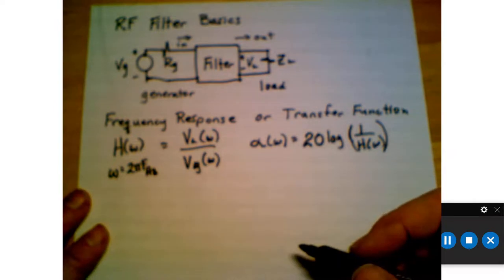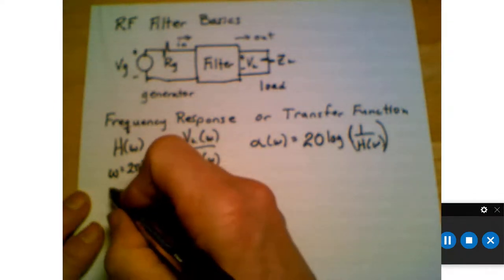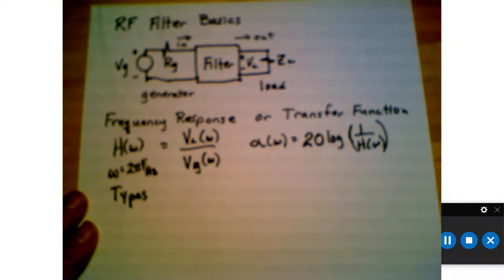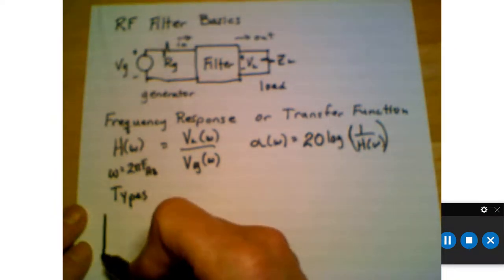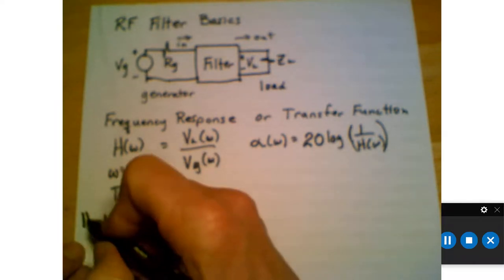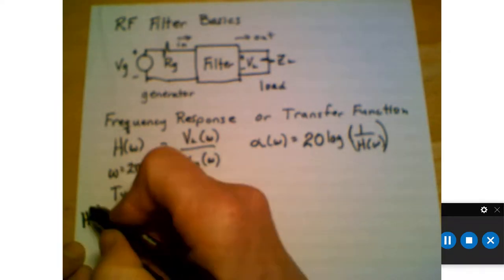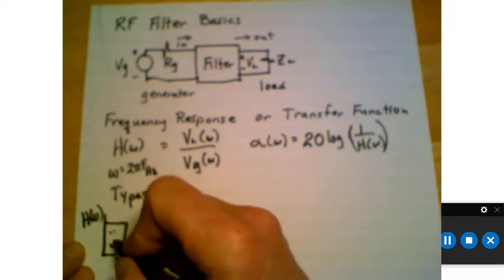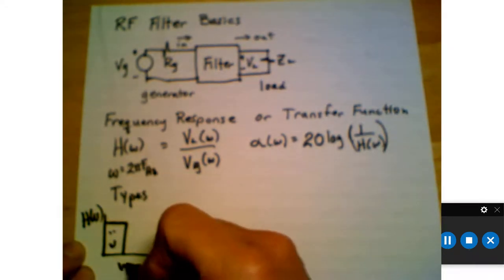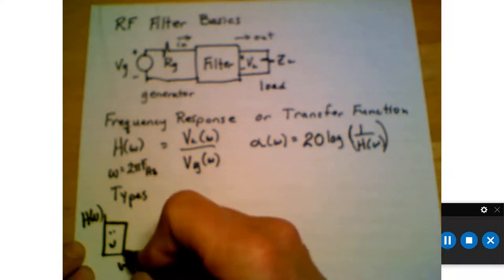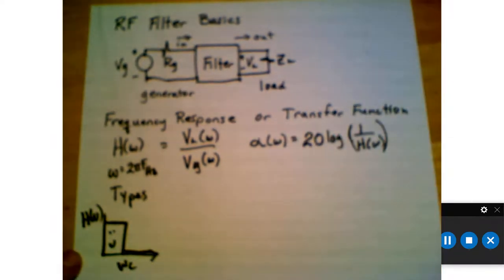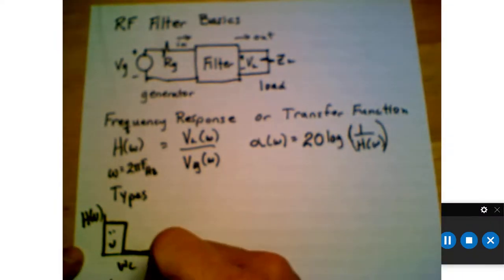Now there are several types of filters. When we consider different types, what we're really talking about is what comes out — we're interested in the output. For example, a low-pass filter: when we define H of omega and we want to pass low frequencies, they pass through. Then there's a cutoff frequency after which none of them come out and the output is zero. That frequency is called the cutoff frequency. This is a low-pass filter.